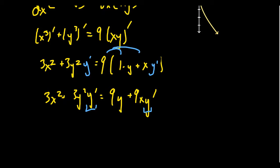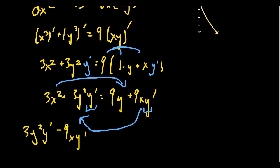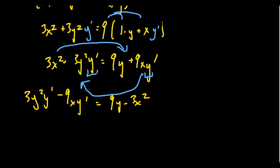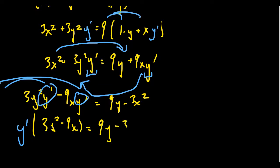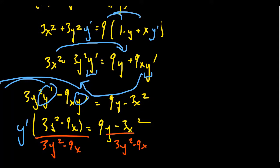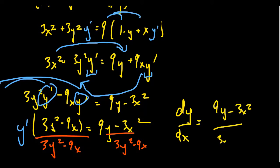We combine all the y prime terms on one side. Subtracting 9x·y′ from both sides and subtracting 3x squared from both sides gives: 3y squared·y′ minus 9x·y′ equals 9y minus 3x squared. Factoring out y prime on the left: y′ times (3y squared minus 9x) equals 9y minus 3x squared. Dividing both sides by (3y squared minus 9x), we get dy/dx equals (9y minus 3x squared) over (3y squared minus 9x).